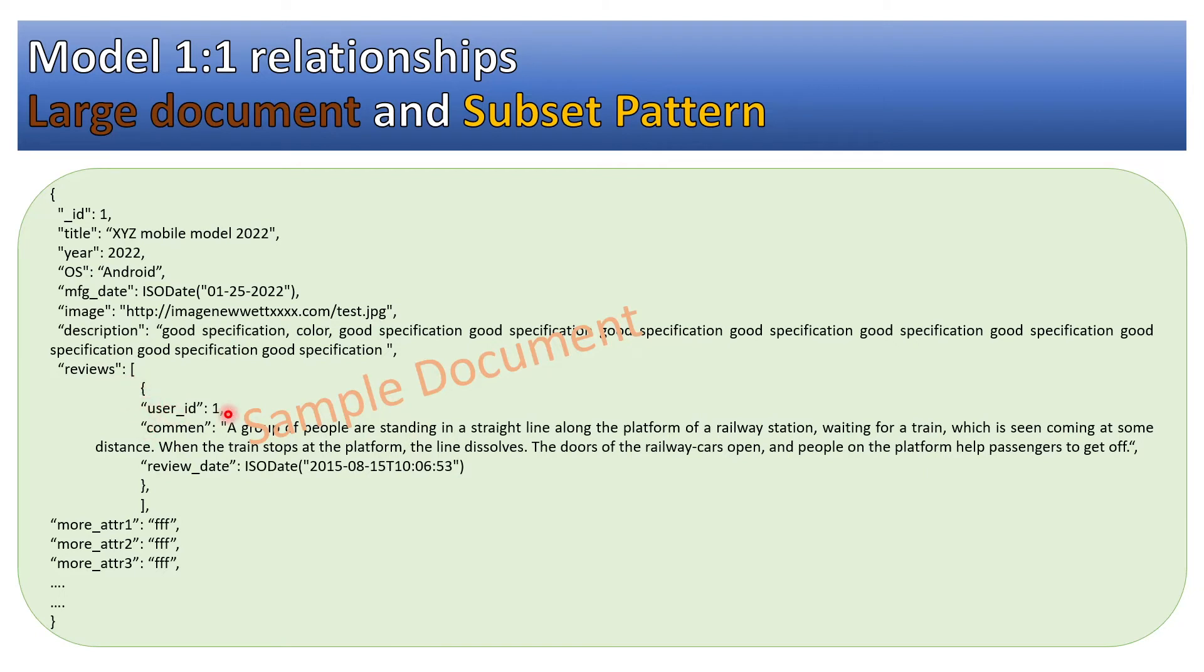Now what to do? If you notice here, reviews are there—it is only showing one review, but it is an array. There could be ten thousands of reviews or hundreds of reviews, but we do not want to fetch all the reviews in a single go. What should we do in that case? Subset pattern comes to our rescue.